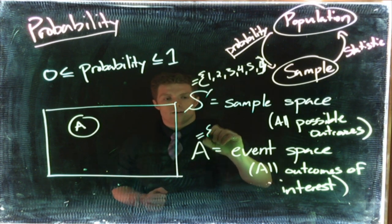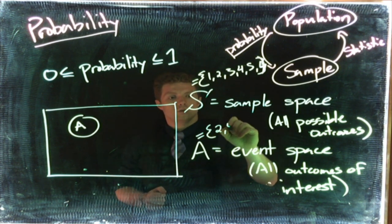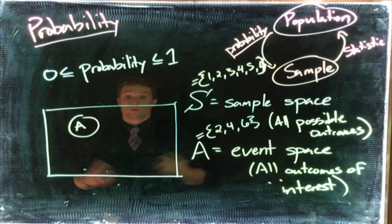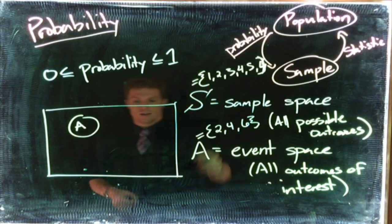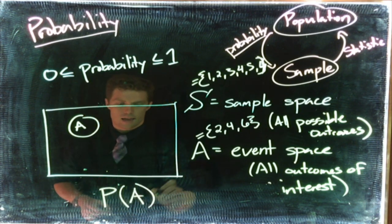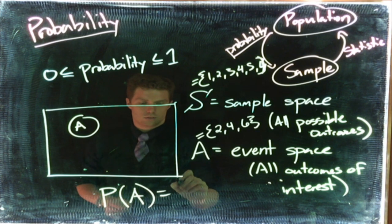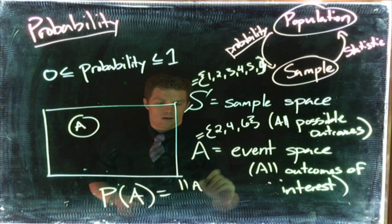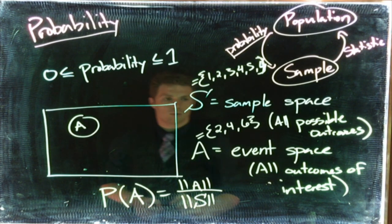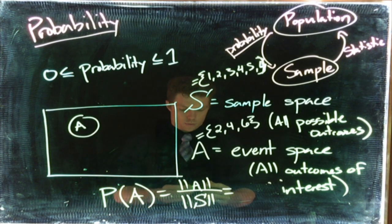Now if we're looking for the probability of event A, we can write it as such: probability of event A is equal to—okay, so it's the number of outcomes in A divided by the number of outcomes in your sample space. So that should be pretty easy to do.